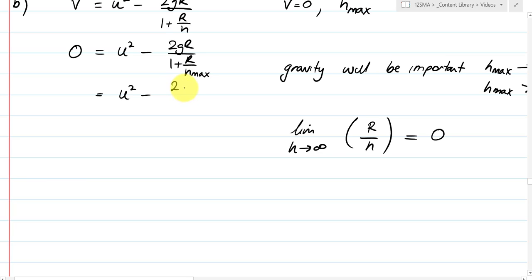And so that means we get this. U squared minus 2gr over one. Which means that we get u squared equals 2gr. And that means that u equals the square root of 2gr.